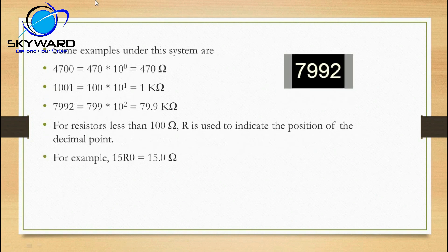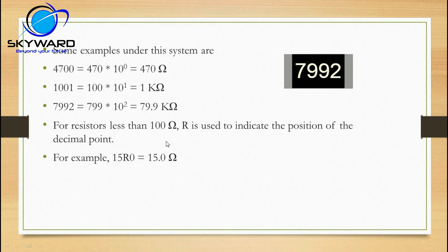In four-digit code the rules are the same: the first three digits are placed as they are and the last one is the multiplier as 10 to the power of that digit. For example, 1 means 10 to the power 1, 2 means 10 to the power 2. In four-digit resistors, R indicates a value below 100 ohm — for example, 15R0 means 15.0 ohm.